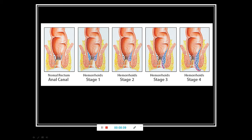Stage two: the nodes are increased and prolapse outside the anal channel during defecation or hard work, then come back inside without additional assistance. Stage three: the nodes prolapse after defecation, hard work, lifting weights, coughing, or sneezing, and do not return on their own — the patient needs to use hand assistance to push them back. Stage four: the nodes prolapse permanently and never come back inside, even using hand assistance.